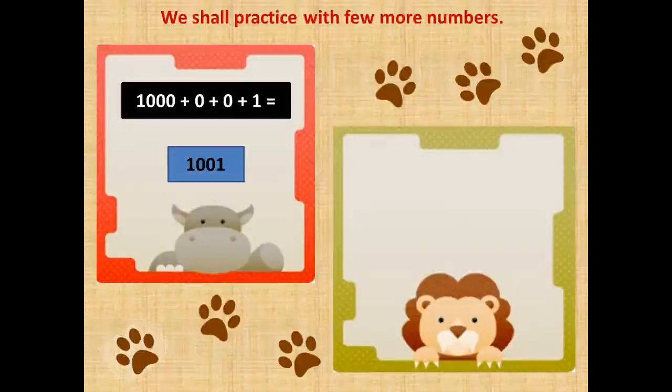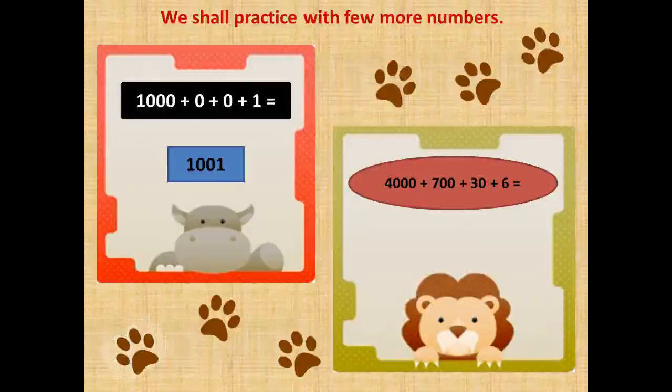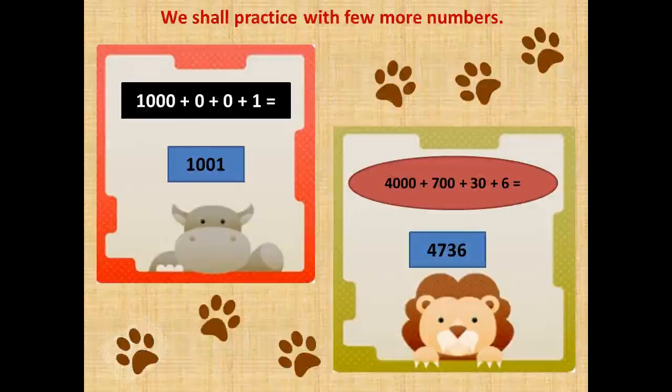The next number is 4,000 plus 700 plus 30 plus 6. Any guesses children? Correct! It is 4,736.